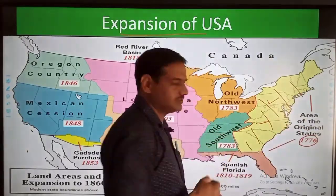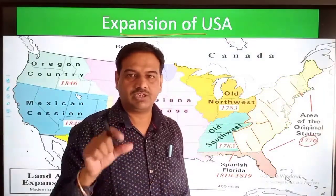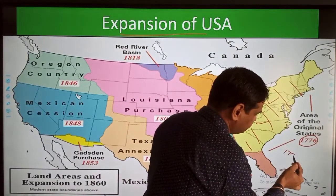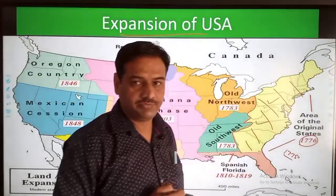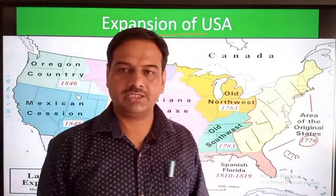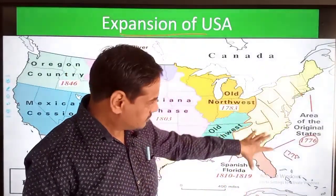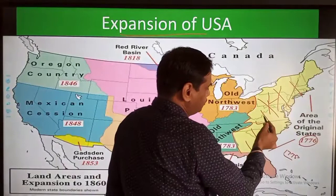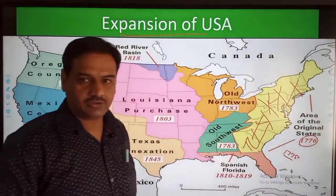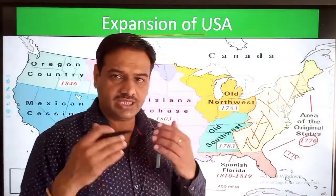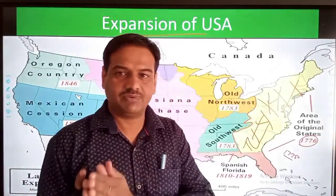The American War of Independence was fought around 1775 and it ended the same year. Thereafter it was recognized by the British Parliament as an independent country in 1783. So right after the American War of Independence, the US was confined only to the eastern coast of the American continent, and later it expanded towards the western side.